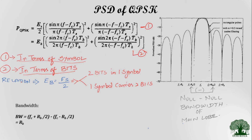From the PSD equations, we can establish the relationship: Eb = Es/2. This can be interpreted in two ways: two bits are placed in one symbol, or equivalently, one symbol carries two bits at a time. This is the fundamental relationship between bit energy and symbol energy in QPSK.